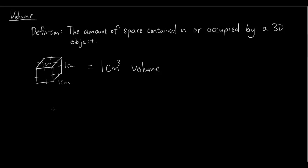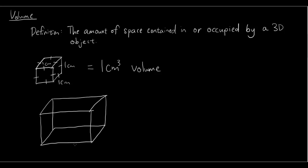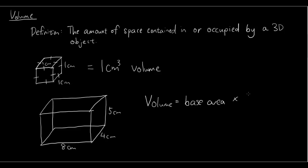For example, let's have a look at a rectangular prism. Here's a rectangular prism — let's say it's 8cm long, 4cm wide, and 5cm high. How many of these little cubes can fit in it? The first thing we do is find the area of the base. So the volume is equal to the base area times the height.